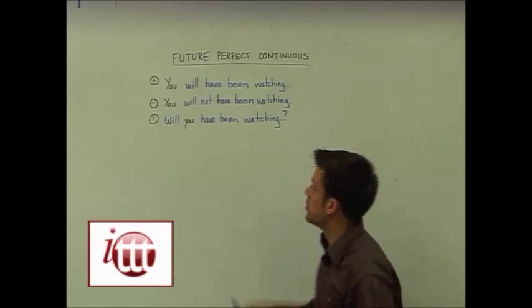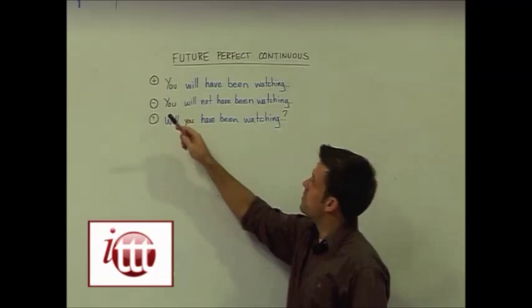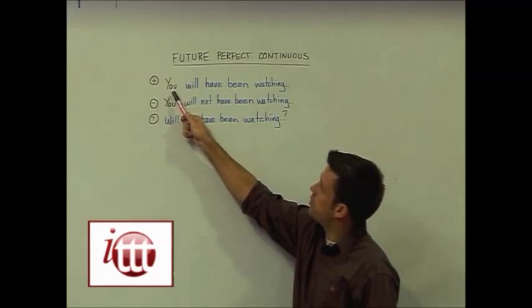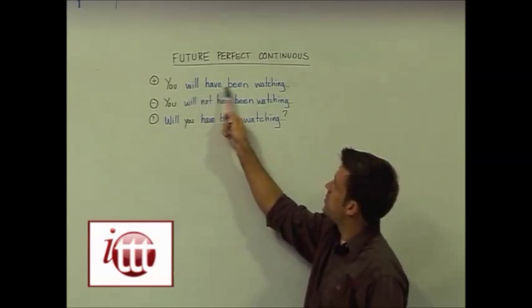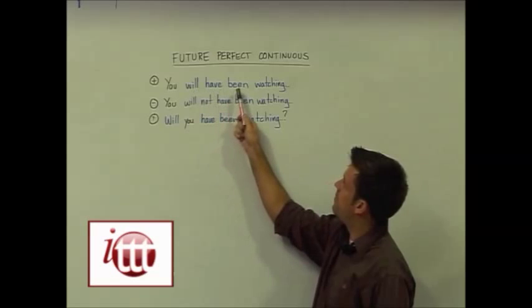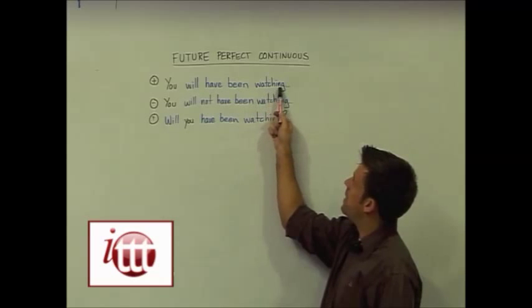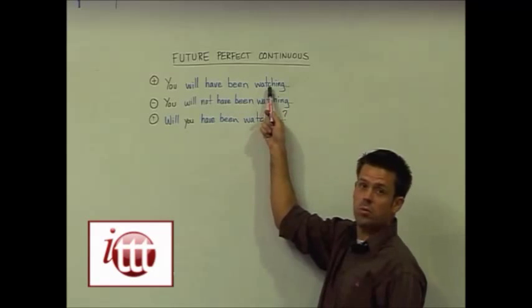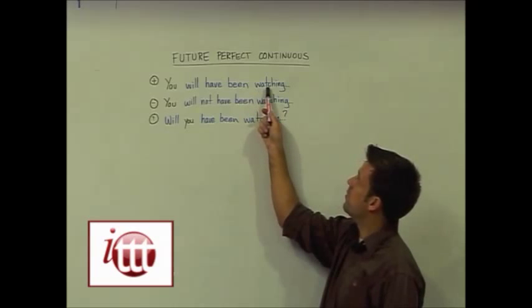Our examples for the positive sentence have our subject 'you' and three auxiliary verbs: will, have, been, and then our main verb in the present participle form. Again, that's the verb plus ing.